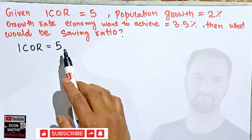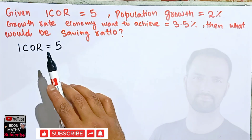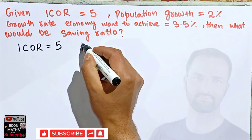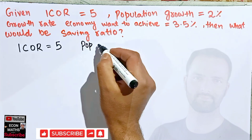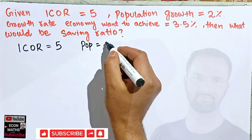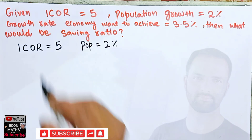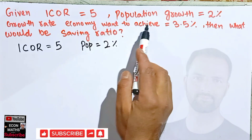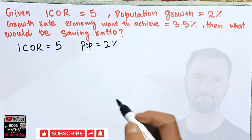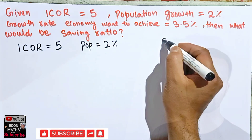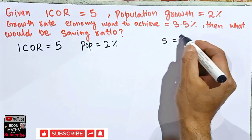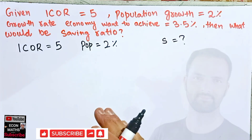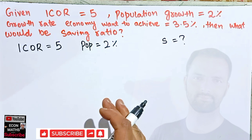That means we need 5 units of capital to produce one unit of output. Population growth rate is given as 2%, and the growth rate the economy wants to achieve is 3.5%. We need to find the value of s — the saving ratio.